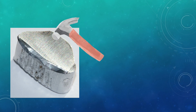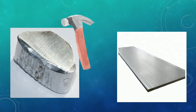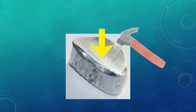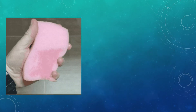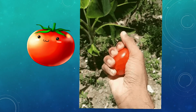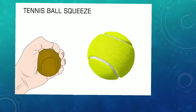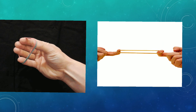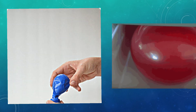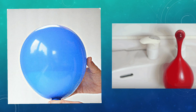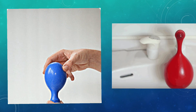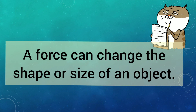When we hammer a piece of aluminium metal, its shape changes and an aluminium sheet is formed. This change in shape occurs because we apply force while hammering. Similarly, the shape of a sponge, tomato, balloon, or tennis ball changes on pressing. The shape and size of a rubber band changes on stretching. The shape and size of a balloon changes when it is filled with air or water, because the air exerts force on the walls of the balloon from inside. From these examples we can conclude that a force can change the shape and size of an object.